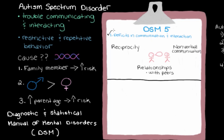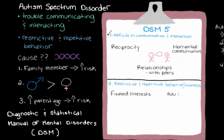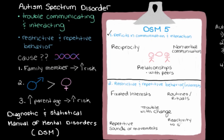There's one more main category that also needs to be checked off before we can officially make a diagnosis of Autism Spectrum Disorder, and that's restrictive and repetitive behavior and interests. A child might show really fixated interests, only interested in one or two activities with no interest in any others. They might be strict about following routines or rituals, or really struggle with change. They might have repetitive sounds, movements, or behaviors, or react to stimulation like bright lights or loud sounds more or less than expected.